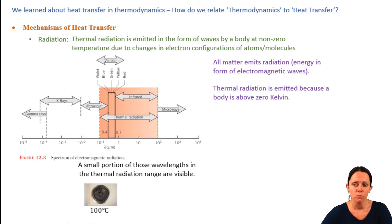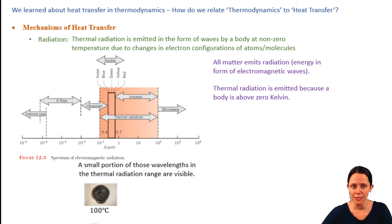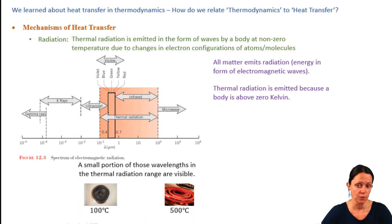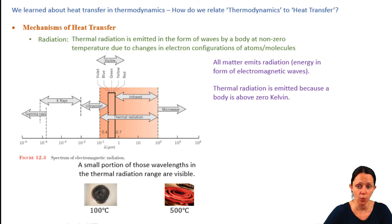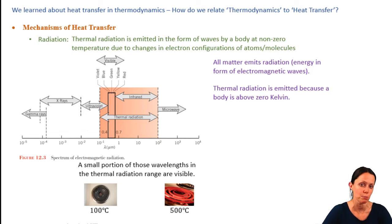For example, if you look at a coil on a stove at 100 degrees Celsius, you wouldn't be able to tell it's hot just by looking at it. However, once the temperature gets up to 500 degrees Celsius, that coil is going to glow — that's visible thermal radiation. So you know that the thermal radiation from that coil is between 0.4 and 0.7 microns, probably closer to 0.7 microns since it's glowing orange-red.